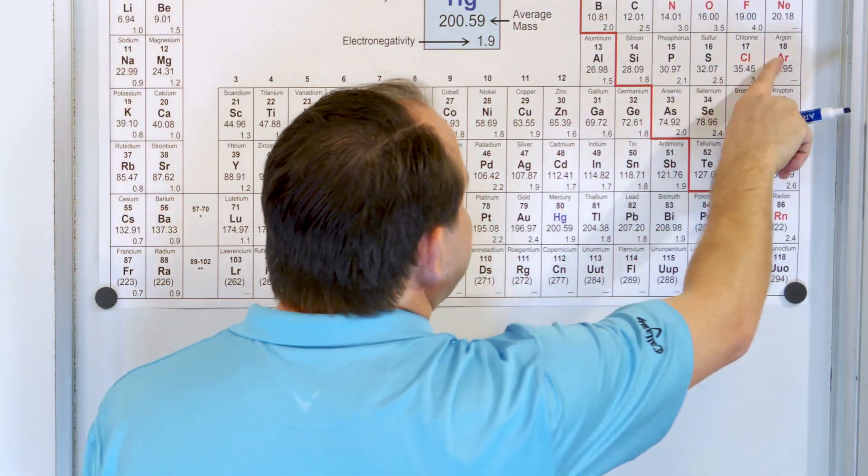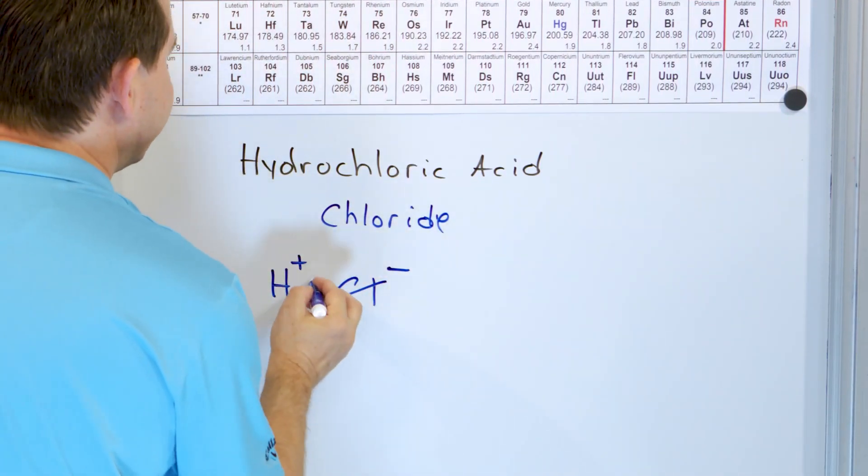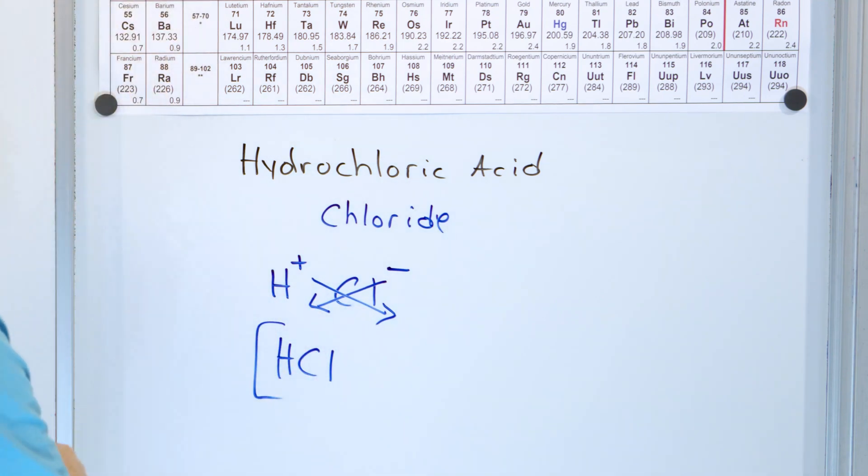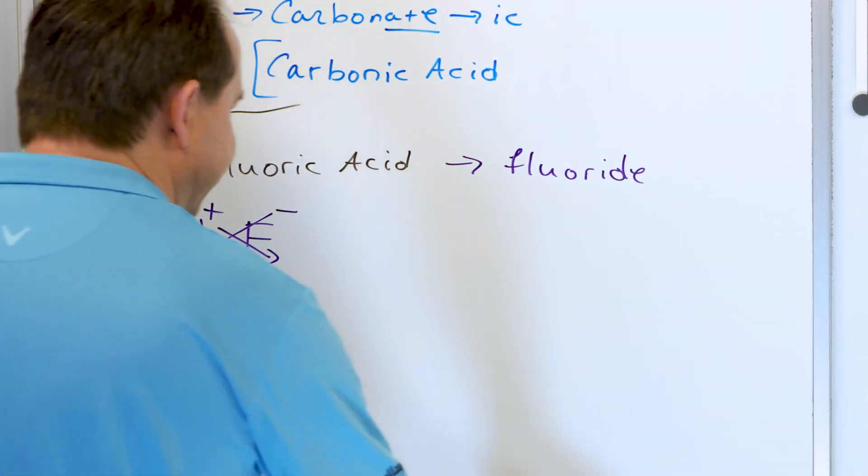Chlorine likes to take a negative one charge, and hydrogen likes to take a positive one charge. And so when we do the crisscross, you get HCl. That's why the formula is HCl.